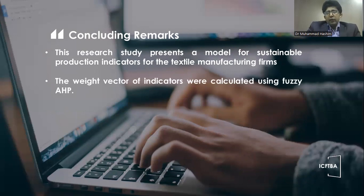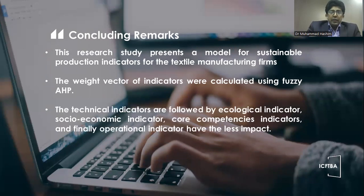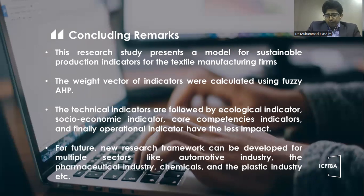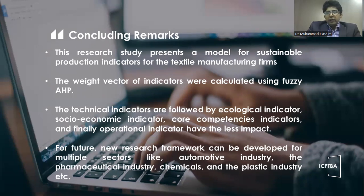This research study presents a model for sustainable production indicators for textile manufacturing firms. The weight factors of indicators were calculated using FASI-EHP. Technical indicators are followed by ecological indicators, socio-economic indicators, core competency indicators, and finally operational indicators, which have the least impact. Regarding future research, a new framework can be developed for multiple sectors like the automotive industry, pharmaceutical industry, chemicals, and the plastic industry. Thanks for listening and watching.